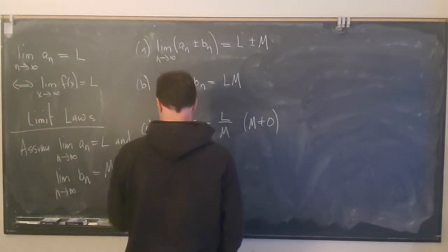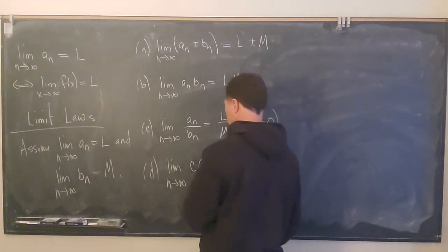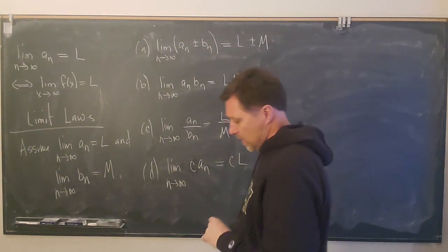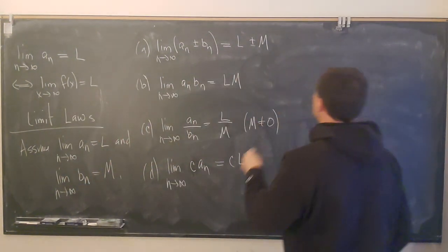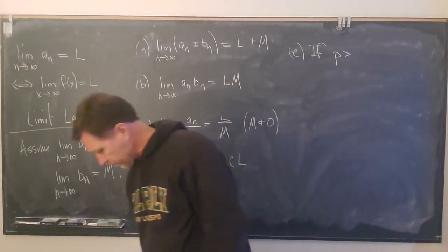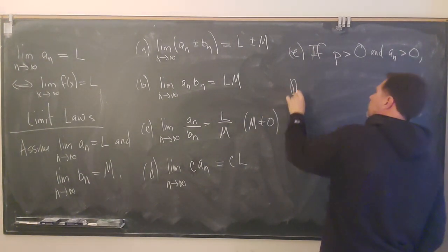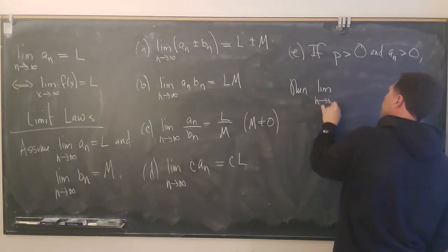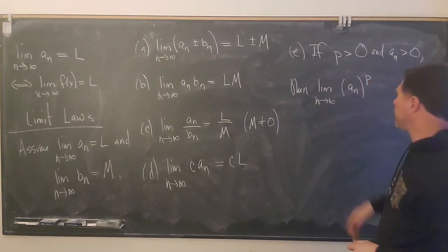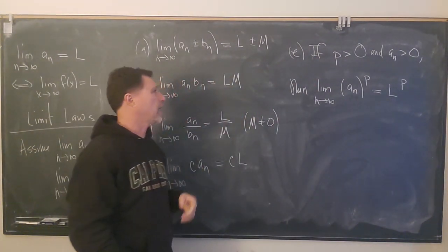If we have our sequence a sub n and multiply by a constant c, that creates a new sequence and the limit is c times l. And the last limit law: if p is greater than zero and a sub n is greater than zero, then the limit as n goes to infinity of a sub n raised to the p equals l raised to the p. This works as long as p is a positive real number and a sub n is also positive.